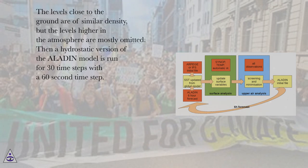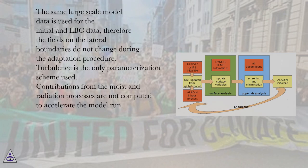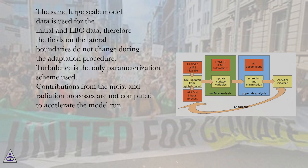A hydrostatic version of the ALADIN model is then run for 30 time steps with a 60-second time step. The same large-scale model data is used for both initial and lateral boundary condition (LBC) data, so the fields on the lateral boundaries do not change during the adaptation procedure. Turbulence is the only parameterization scheme used; contributions from moist and radiation processes are not computed in order to accelerate the model run.